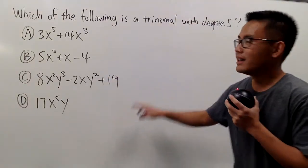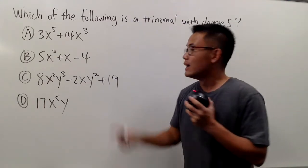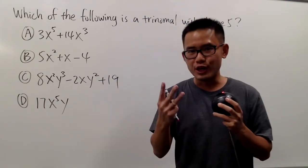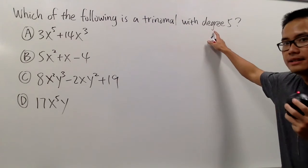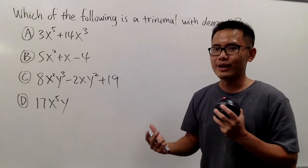Now we'll see which of this right here is a trinomial with degree 5. Remember, trinomial means that we must have three terms, and degree is the highest combining exponent in a term of a polynomial.